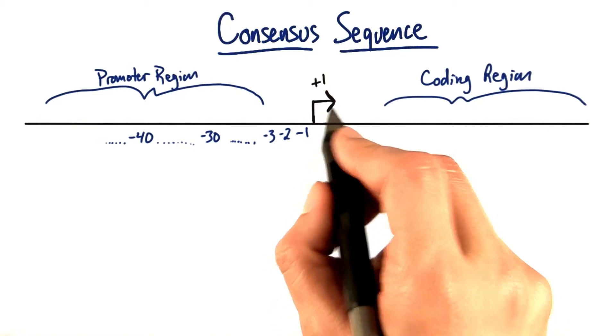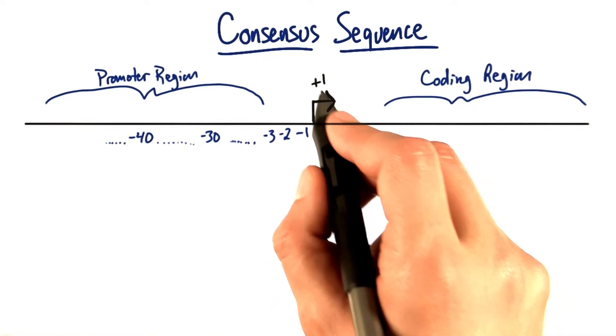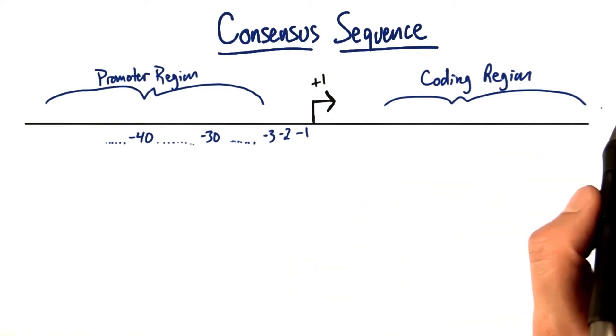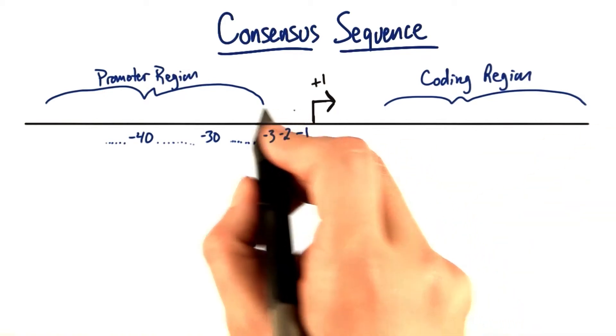So here we have the transcription start site indicated by the arrow and the plus one. The coding region is over here to the right. And in front of it, over here,